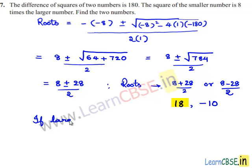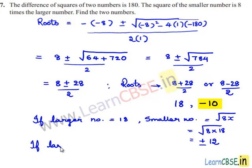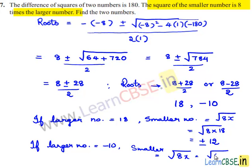If the larger number is equal to 18, then the smaller number is the square root of 8x, which is the square root of 8 times 18, giving plus or minus 12. If the larger number is equal to minus 10, then the smaller number would be the square root of 8 times minus 10, which does not exist.